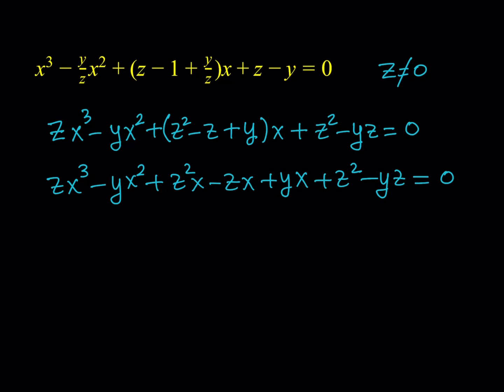So we get zx³ minus yx² plus z²x minus zx plus yx plus z² plus yz, all equal to zero. Now, why did we distribute everything? Here's the trick: for this problem, it's very hard — nearly impossible — to solve for x directly. You'd probably need to use something like Wolfram Alpha, and even then it's going to be super complicated. So what we'd like to do is turn this into a quadratic. That is possible because if you pay attention to this equation, you'll notice it has x², x³ — that's cubic — but it also has z² in it. Basically, that means I can write this equation as a quadratic in z.